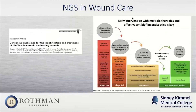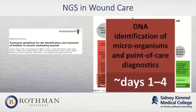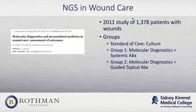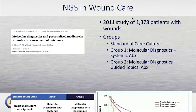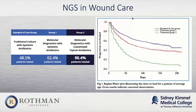Lastly, looking at wound care, this is a consensus guideline showing that identification of microorganisms through genomic testing in days one to four is very important. A study of almost 1,400 patients comparing treatment based on culture versus treatment based on molecular diagnostics — either systemic diagnostics or guided topical antibiotics — showed that treatment based on NGS had a beneficial effect in both groups compared to culture.